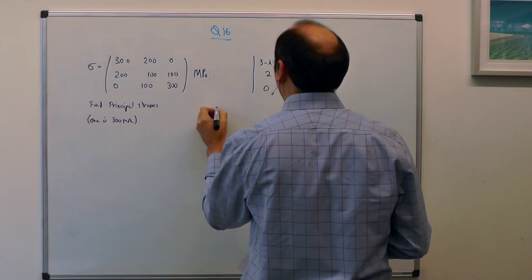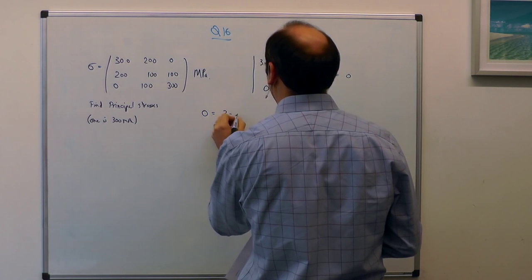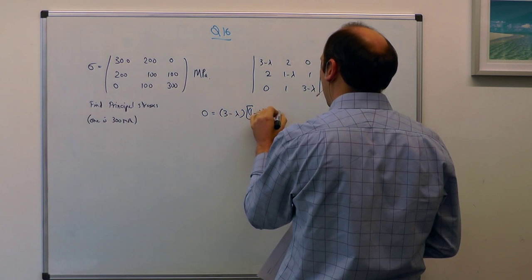And to find the eigenvalues of that, we want to set that equal to 0. So now we have 0 is equal to 3 minus lambda, 1 minus lambda, 3 minus lambda, minus 1 squared.